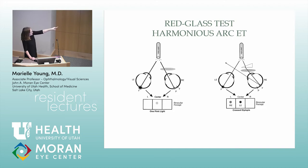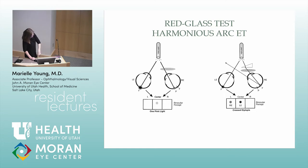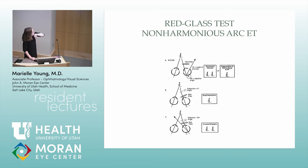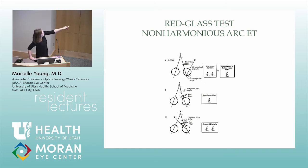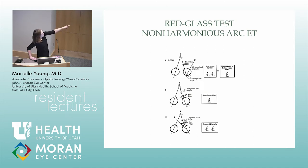In harmonious anomalous retinal correspondence with an esotropia, the fovea is lined up with the pseudofovea. The brain adapts to get some binocularity. When looking at a red light, they blend the red from the right eye with the left eye image and it becomes pink. But when you fully correct their esotropia and put the image on the true fovea, they see diplopia.